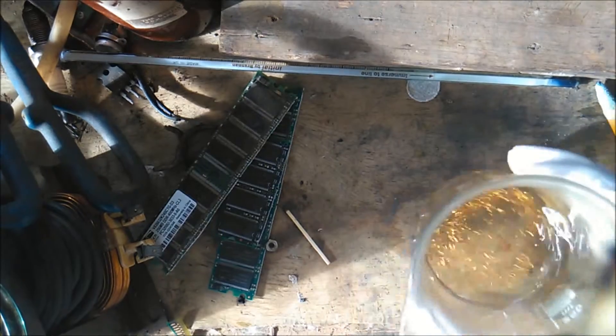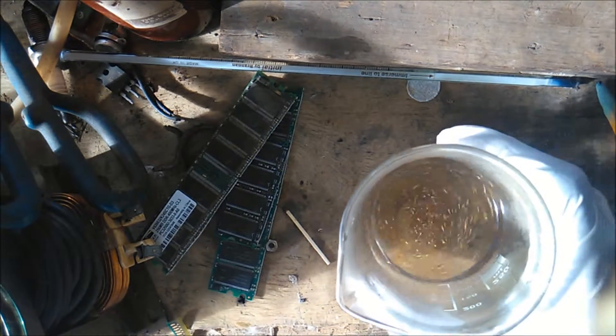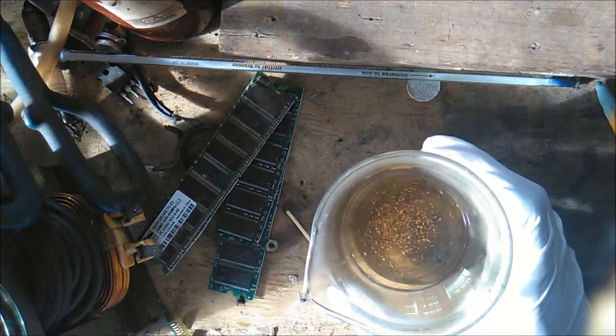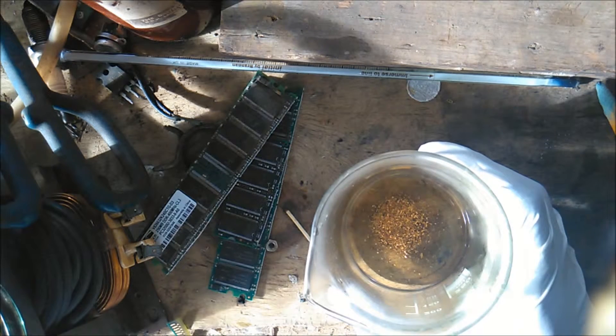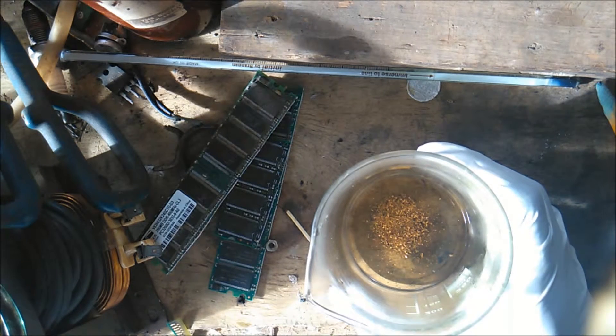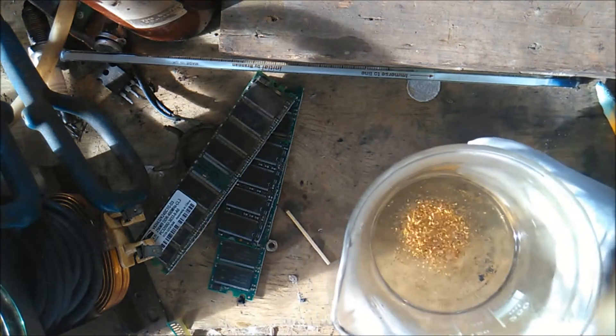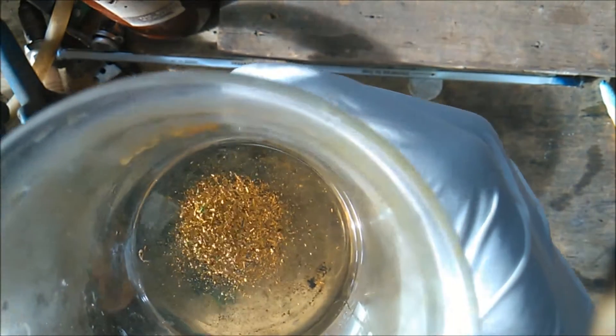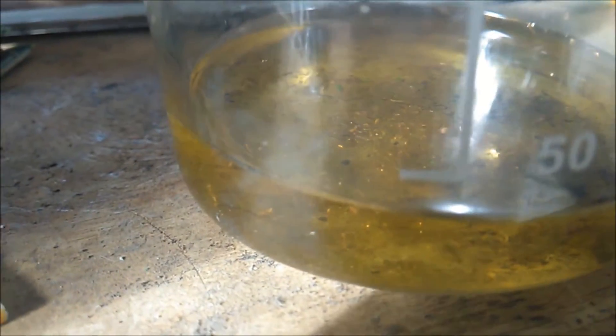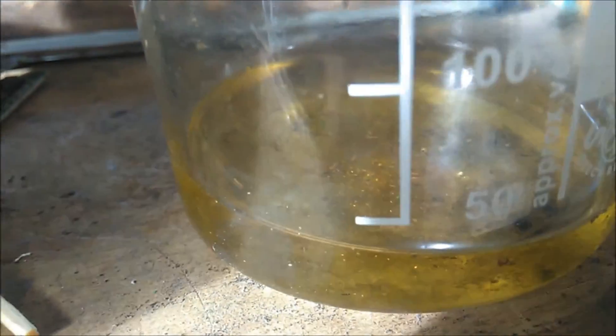Boil this to dissolve everything. After a while, all the gold will be dissolved and you have chloroauric acid, which can be extracted again with sodium metabisulfite. Here is the solution of chloroauric acid.